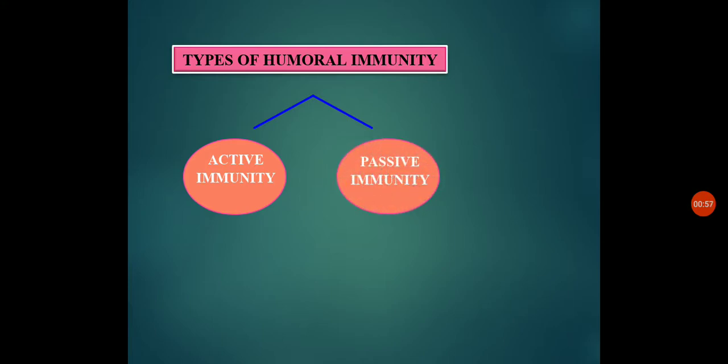As the name indicates, active immunity means we get that immunity by our own system, whereas passive immunity means we get the immunity from a third person — meaning our body does not have the capability to produce that immunity on its own, so it gets it from the mother or any third person. Such type of immunity is known as passive immunity.